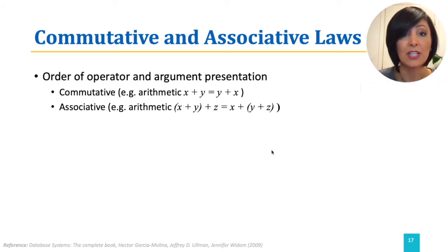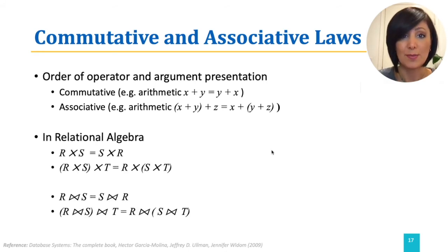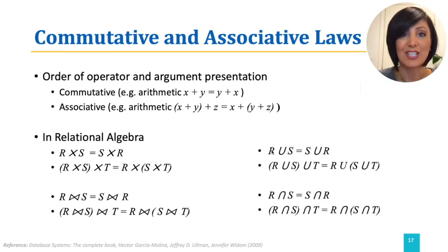Some operators of relational algebra are both associative and commutative. For example, cross product and join, as well as union and intersect.